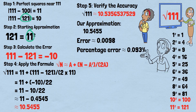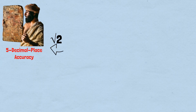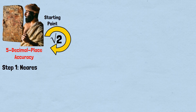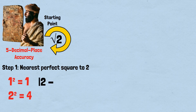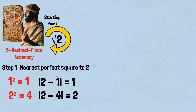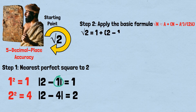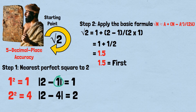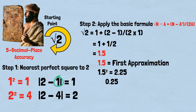The Babylonians achieved their legendary five-decimal-place accuracy for √2 through iteration — repeatedly applying the algorithm using each result as the starting point for the next calculation. Nearest perfect square to 2: using 1 as our closest perfect square. Basic formula: √2 ≈ 1 + (2−1)/(2×1) = 1 + 1/2 = 1.5. This gives our first approximation. Check: 1.5²=2.25, so we're overshooting by 0.25.